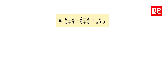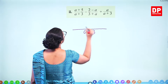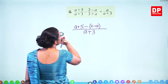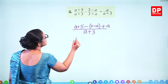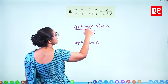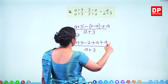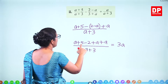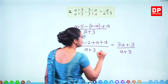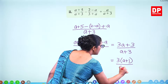Look at this one. The denominator is the same — A plus 3. Numerator: A plus 5, minus (5 minus 2 minus A), plus A. Open brackets: A plus 5 minus 2 plus A — minus minus becomes plus. Combining: A plus A plus A gives 3A, and 5 minus 2 gives 3. So 3A plus 3 over (A plus 3) — you can take 3 out: 3(A plus 1) over (A plus 3). You can't cross out further.